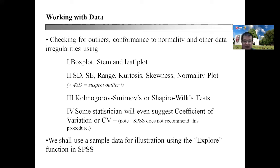As I mentioned earlier, anything more than 4 SD—values that are more than 4 SDs away—could be a suspect outlier. We typically use Kolmogorov-Smirnov or Shapiro-Wilk test to determine whether the data is normally distributed or otherwise. Some statisticians will even suggest coefficient of variation to visualize the variability of the variables itself. However, do note that SPSS does not recommend the use of coefficient of variation or CV to look at variability of the data.